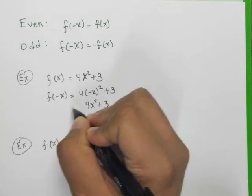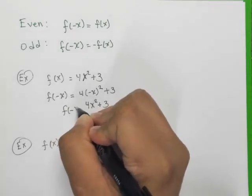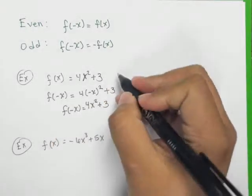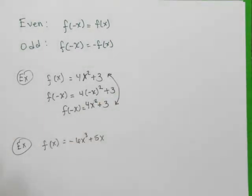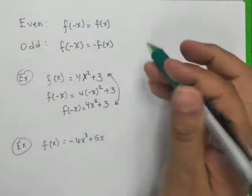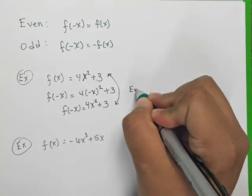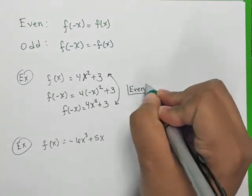So f of negative x here equals the original function when you compare. And since it equals the original function, we call this one right here even. So this is what it means for it to be even.